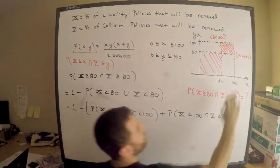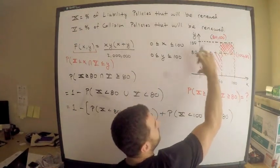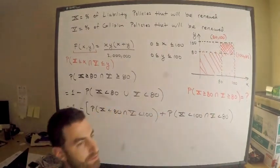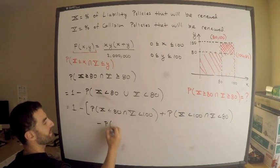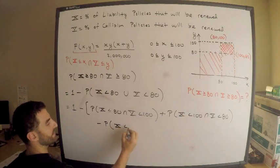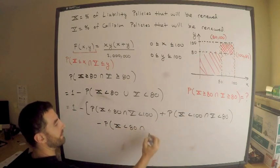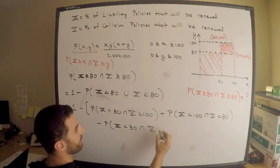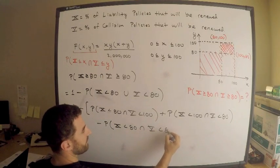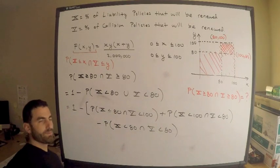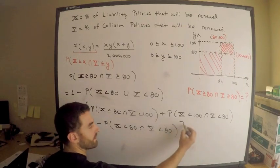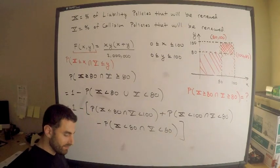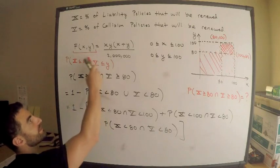But now I need to subtract the square, because I counted it twice, minus the probability that X is less than 80 and Y is less than 80. Again, let me just point out, the motivation for doing it this way is that I want to use the CDF. I do not want to compute an integral. I do not want to find PDFs. Too much work.